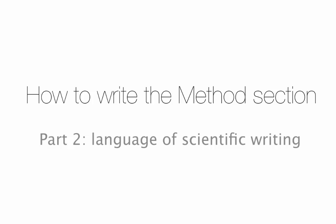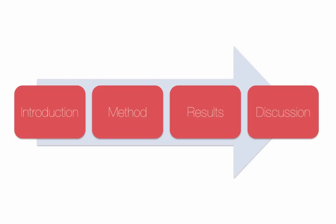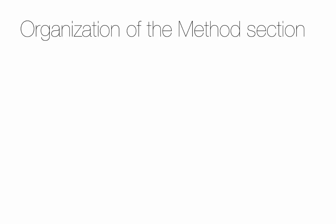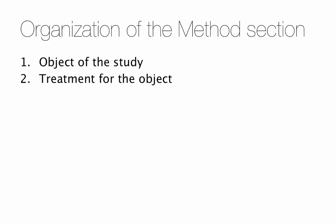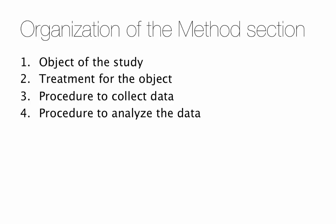In this video we're going to talk about the English of the Methods section. What do you need to know to write it in a style that sounds like a science paper? As a review from the last video, the Methods section is the second part of your paper and it explains how you did your experiment, how you collected your data, and how you analyzed it. It has four main parts: the object of the study, the treatment for the object, the procedure to collect the data, and the procedure to analyze the data.